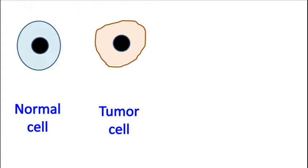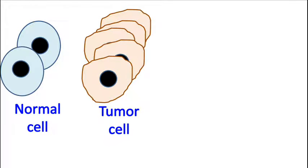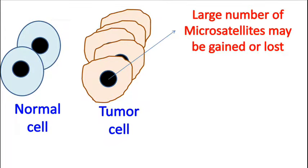The study of microsatellites can give us valuable information. For example, variation in microsatellites can be used to distinguish between a normal cell and an abnormal cell. In case of abnormal cells, the microsatellites may show gain or loss in high frequency.